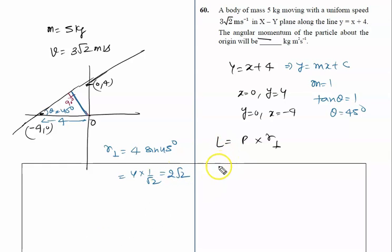Now put the value here: L = p × r_perp. Momentum is mass times velocity, so 5 × 3√2 × 2√2. L = 5 × 3 × 2 × 2 = 60. So the right answer of this question is 60.